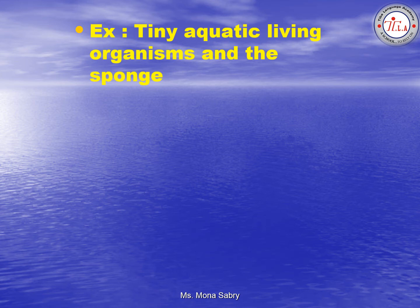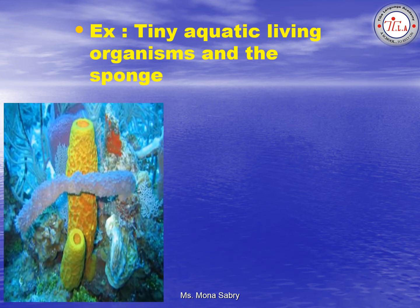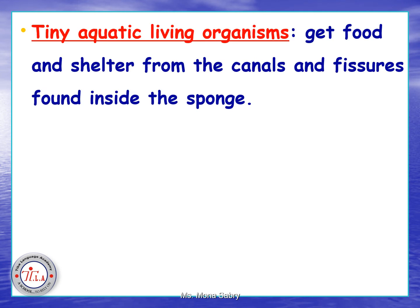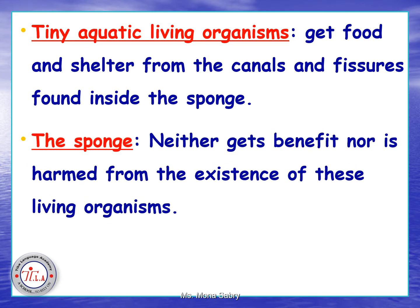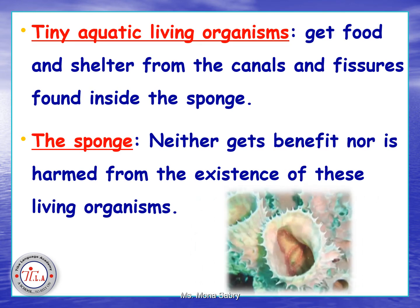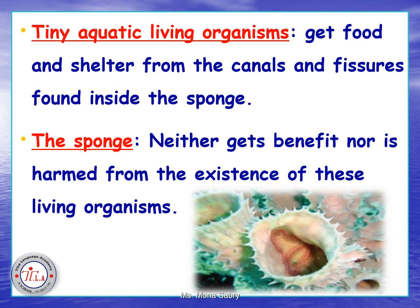For example, tiny aquatic living organisms and the sponge: the tiny aquatic living organisms get food and shelter from the cavities and channels found inside the sponge, while the sponge neither gets benefit nor is harmed. So the relationship between aquatic living organisms and the sponge is commensalism — the aquatic organisms benefit, but the sponge neither benefits nor is harmed.